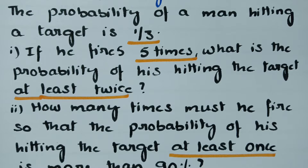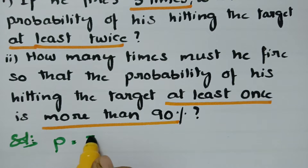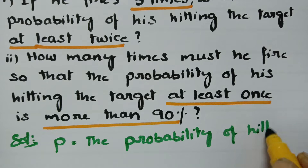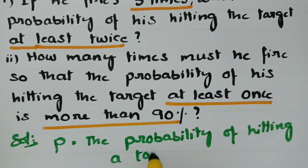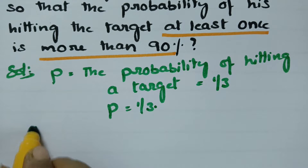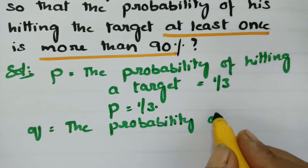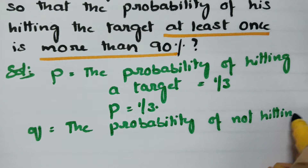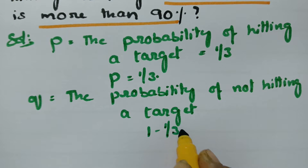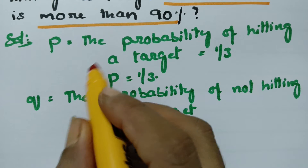First of all, what is given? The probability of man hitting a target is 1 by 3. So P, the probability of hitting a target, is equal to 1 by 3. And Q, the probability of not hitting the target, is 1 minus 1 by 3, which is equal to 2 by 3. So we got the values of P and Q.